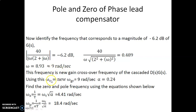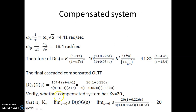With ωc equal to 9 radians per second and α equal to 0.24, we can find the zeros and poles of the phase-lead network, which are at 4.41 radians per second and 18.4 radians per second respectively. Knowing the zero and pole positions, we get the overall transfer function of the compensated system, with the system gain of 20, the zero from the lead network, and the original system poles plus the lead network pole.